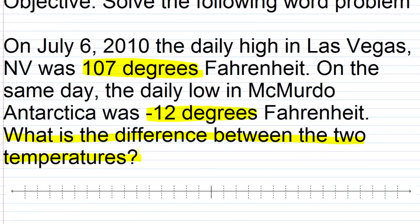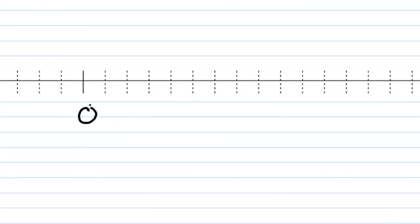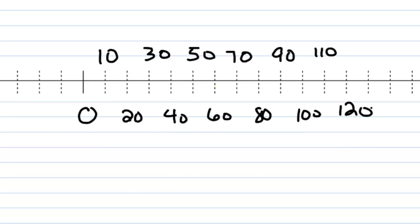Let's look at this number line. We've seen a number line before. I'm going to write zero here and go in increments of 10 — so 10, 20, 30, 40. So 107 would be something like right here. We'll put this as 107.